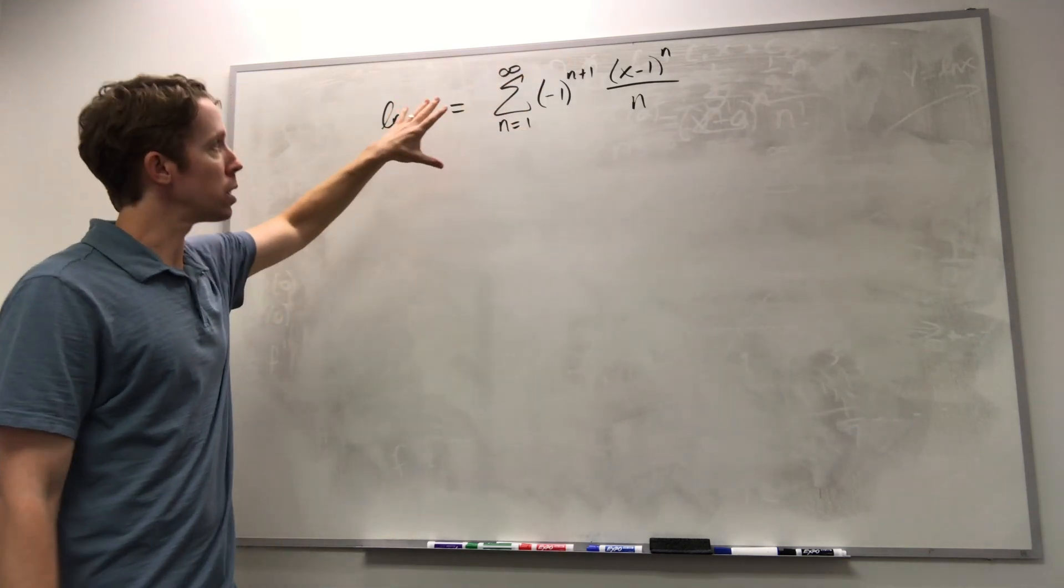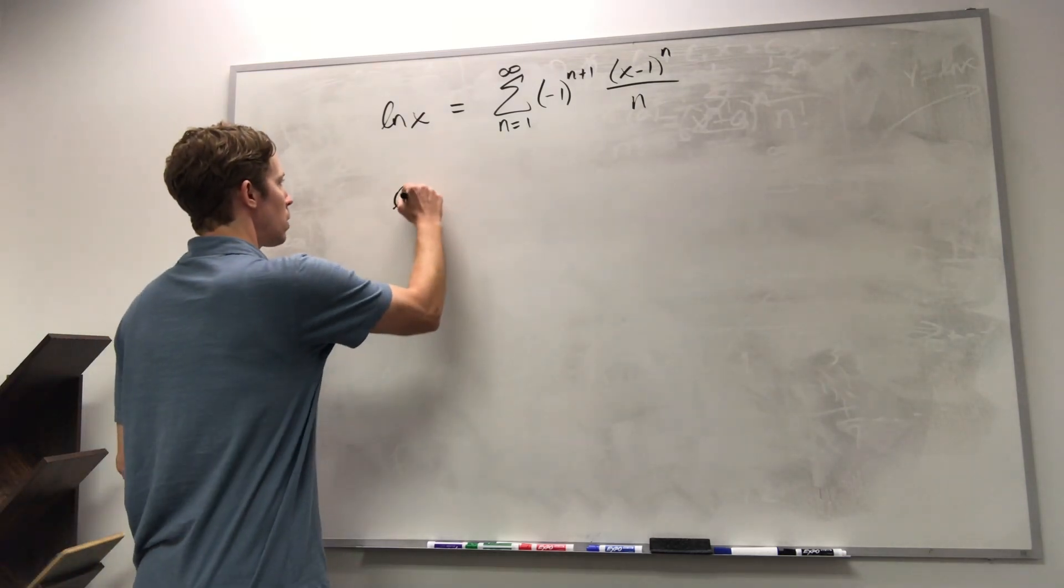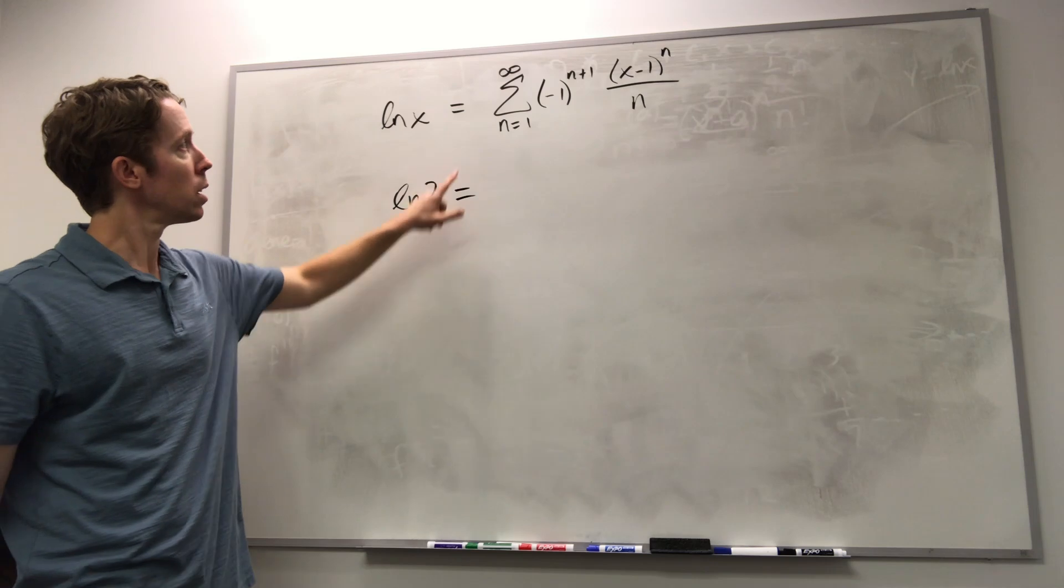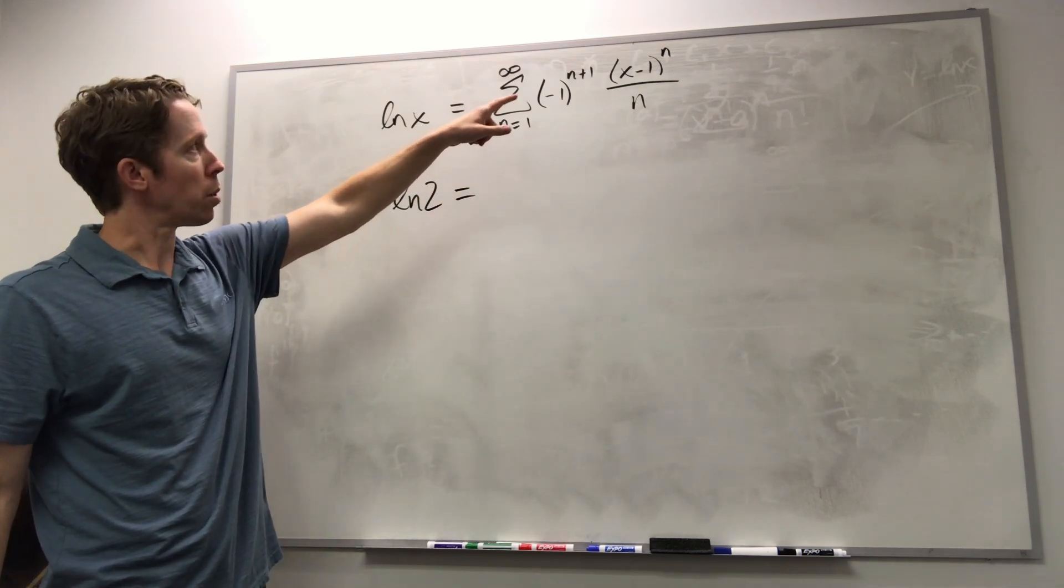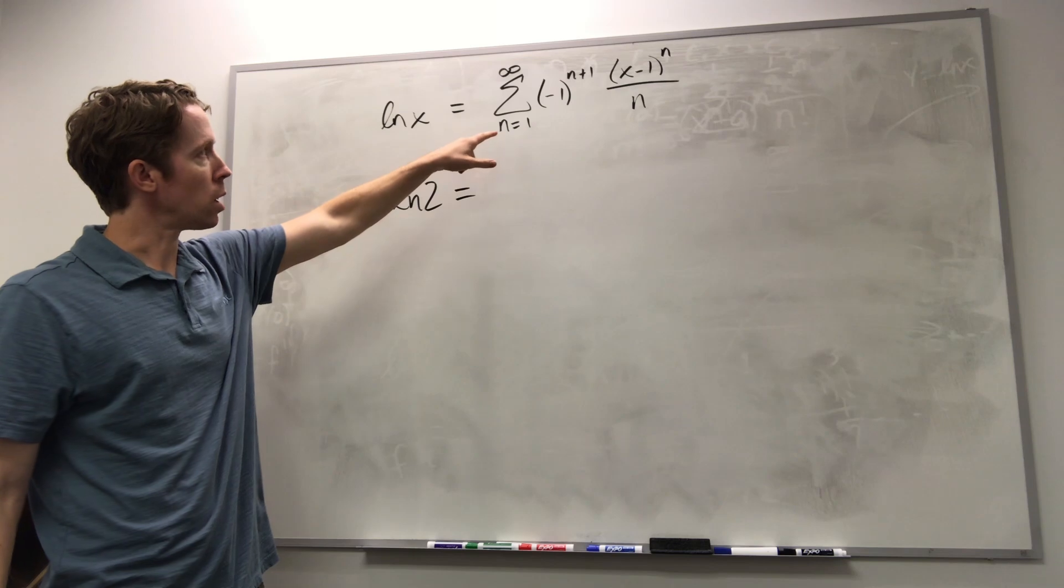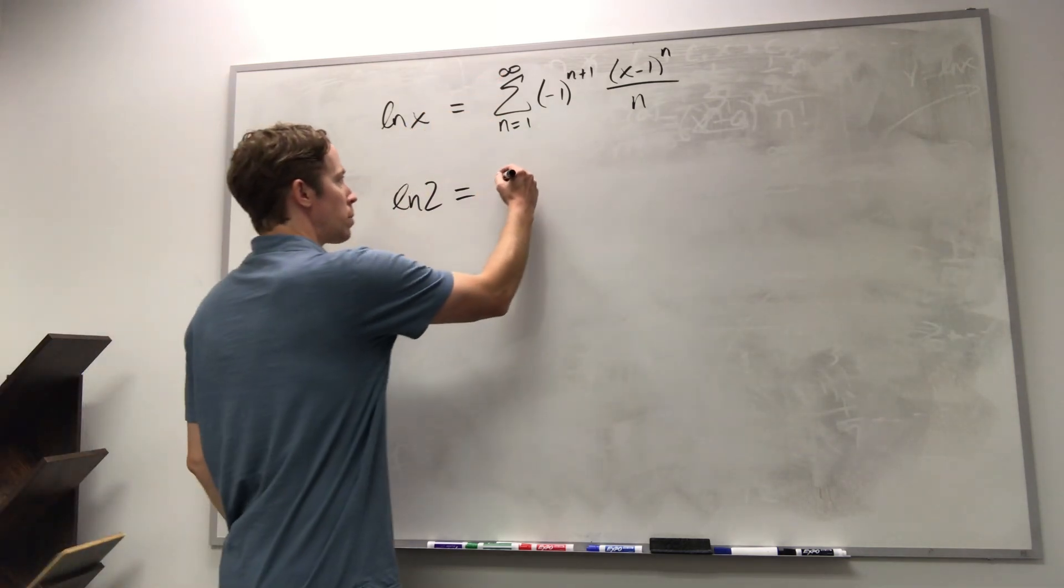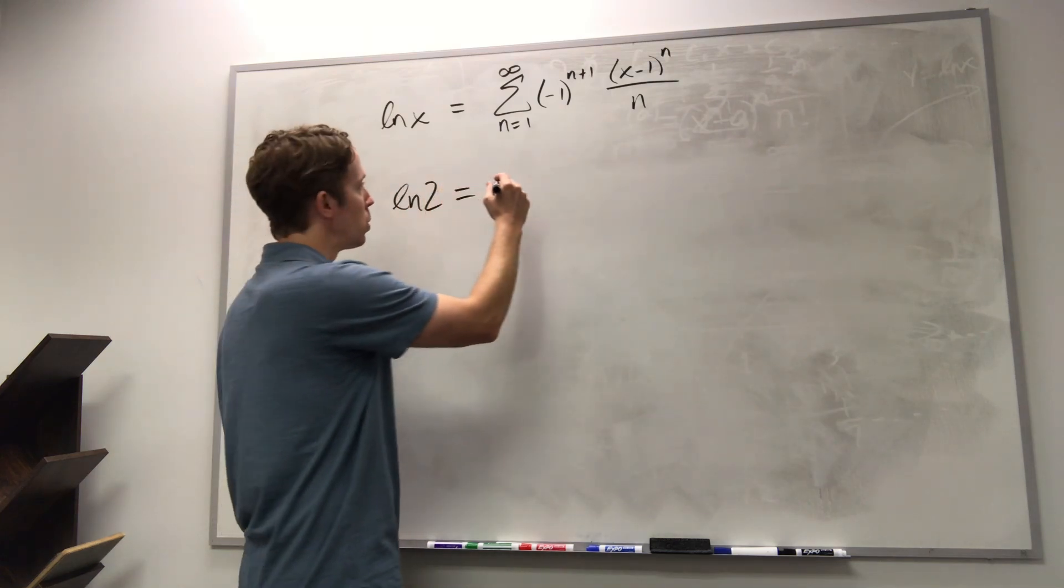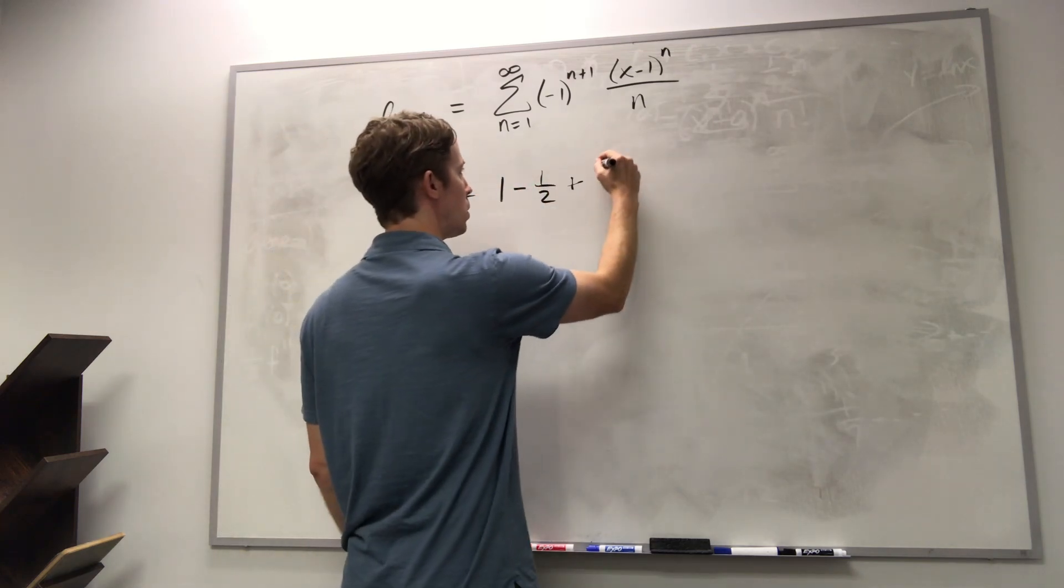And if I use this to look at the natural log of two, for example, that means I'm plugging in two for x. I want to know if this converges or diverges, so I plug in two. I start at n equals one, I get a plus one over one, and then for the second term I get a minus one over two, and then plus one over three, and so on.